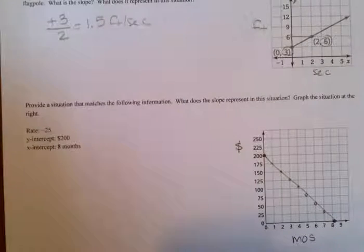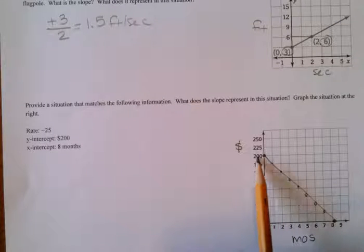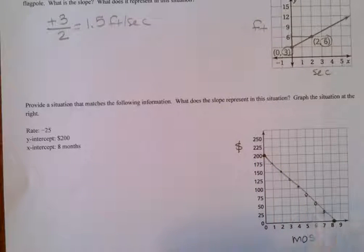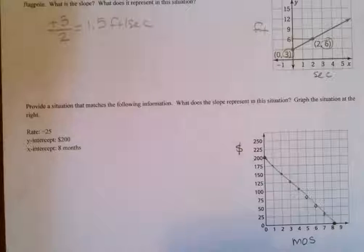Okay, so let's see. What could this story mean? Well, it means that we started with $200 in an account and we are withdrawing $25 per month for eight months until we run out of money. That would be a good explanation for this situation.